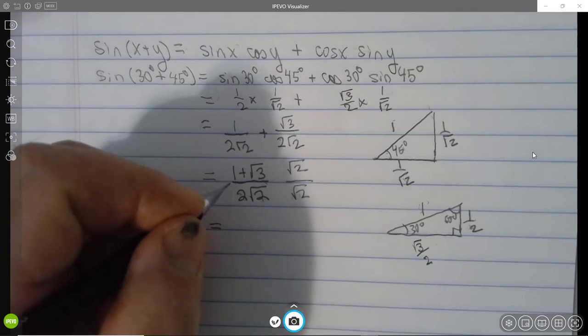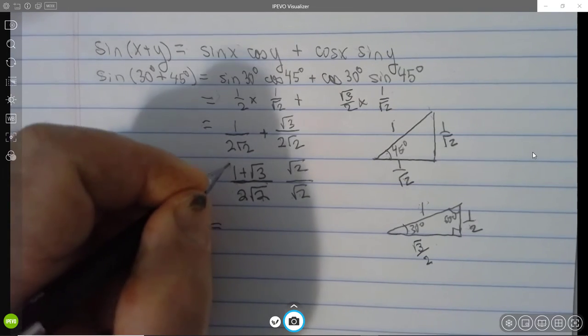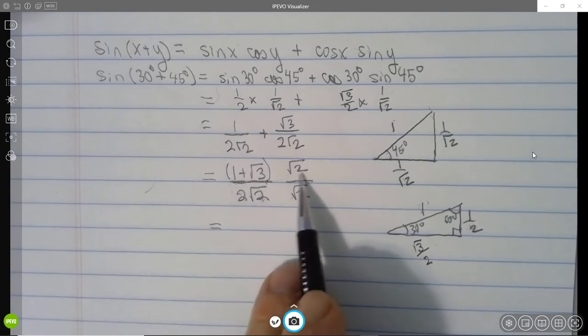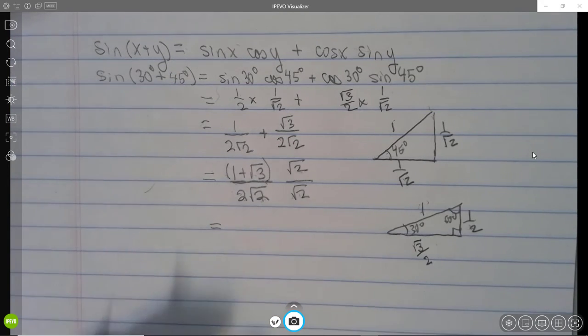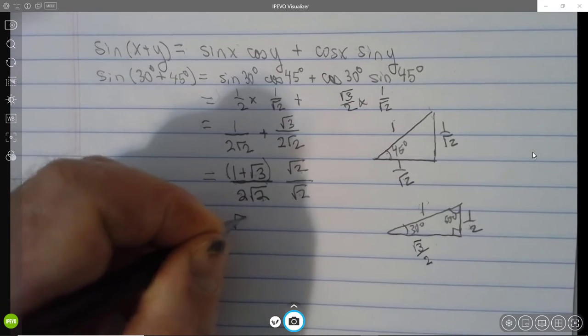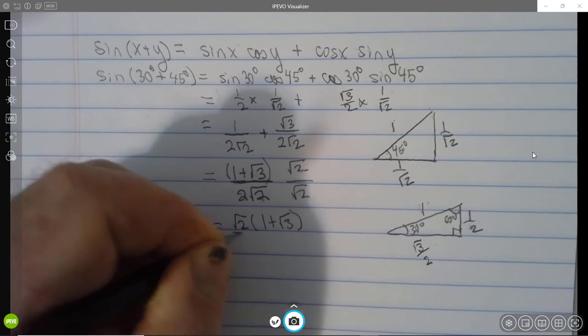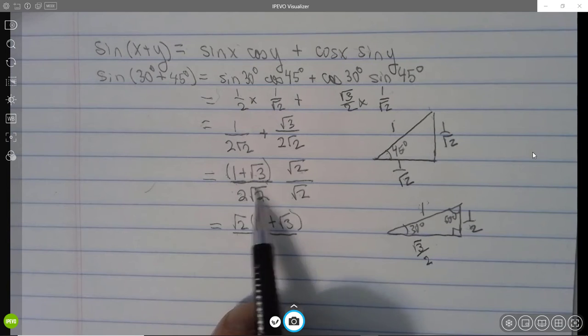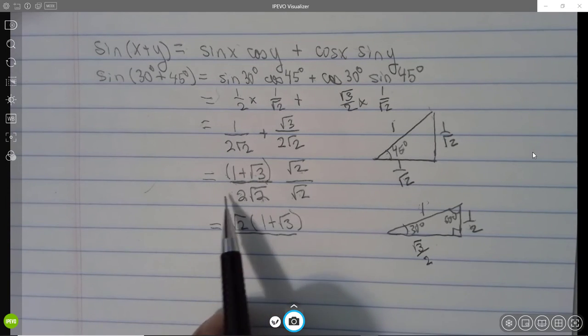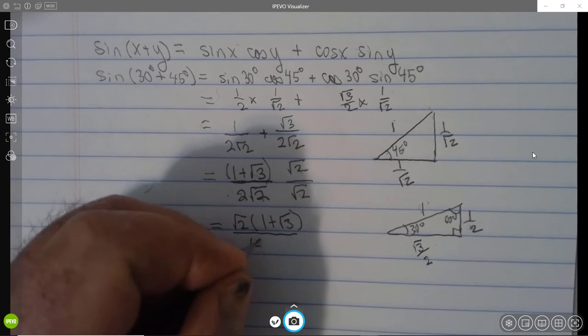And don't forget that a fraction bar acts like a set of parentheses. So this root 2 distributes to both of those pieces. So I've got root 2 times the quantity 1 plus root 3 over, now, root 2 times root 2 is 2, 2 times 2 is 4. So that's a 4 right there.